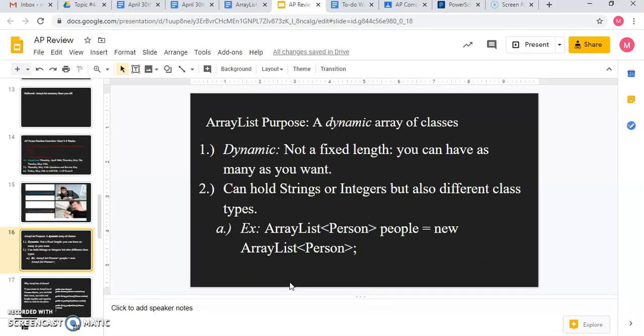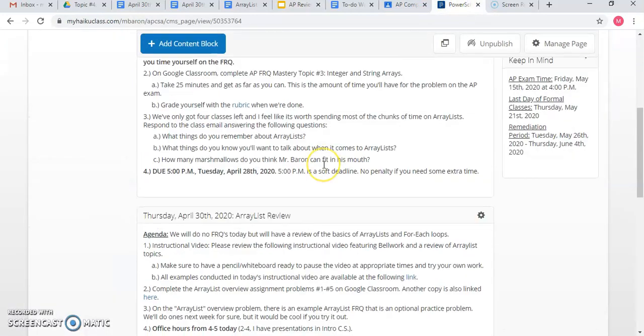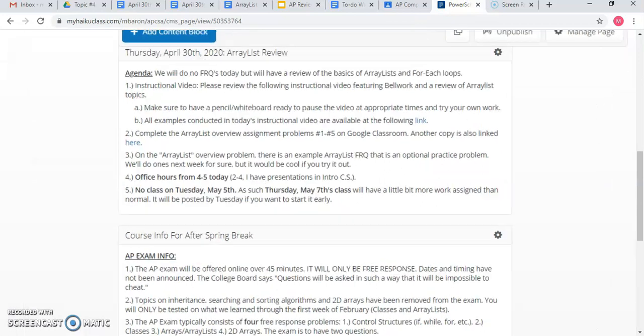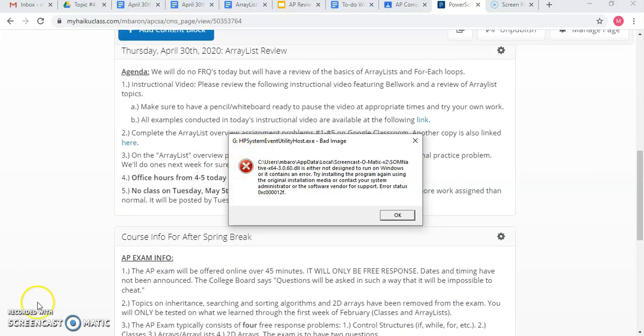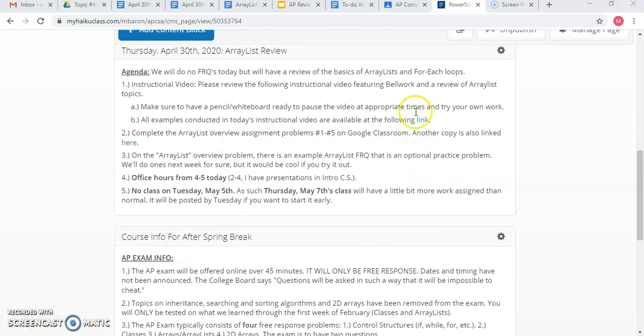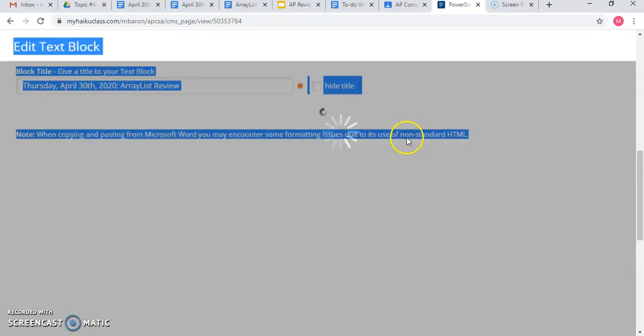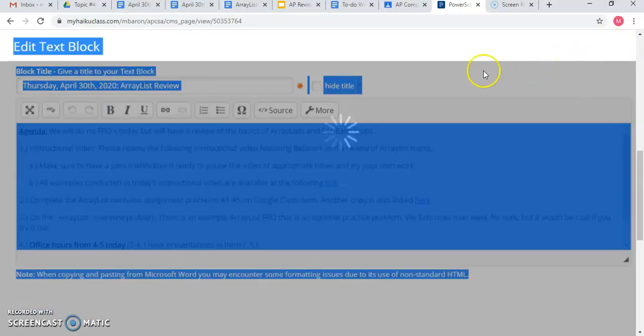Now, just for your purposes, if you find this helpful to know, as I start to talk about array lists, you are going to have a little assignment on Google Classroom tonight. That's five problems, and it has an optional FRQ. And if you go to today's page, you'll see that all the examples I'm conducting today are at the available link. And if you want to look at a list of problems, you can do that there. I'm also going to ask you to do some practice problems as we roll through here today.